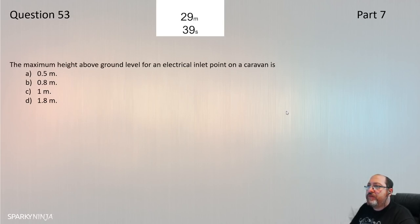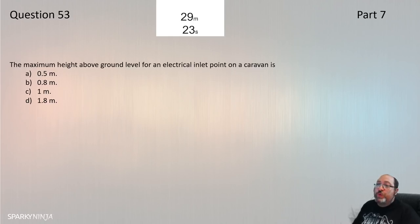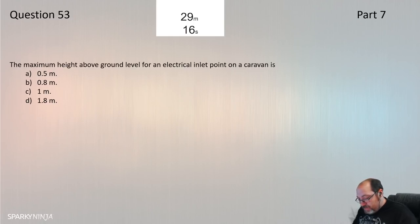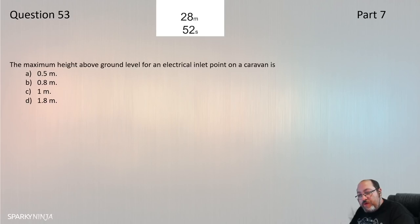Question 53: Maximum height above ground for an electric inlet point on a caravan — regulation 721, not caravan park. Going to 721.55.1.2: the inlet shall be not more than 1.8 metres above ground level. Question 53 is D, from 721.55.1.2.